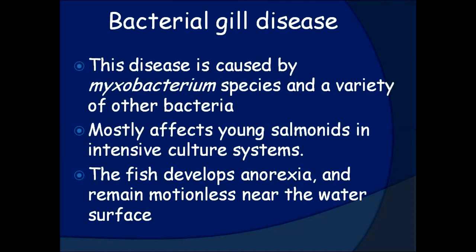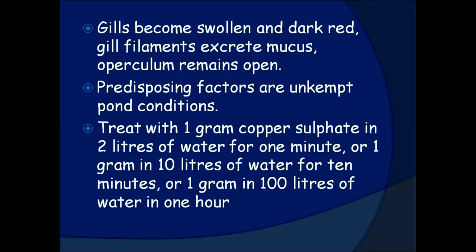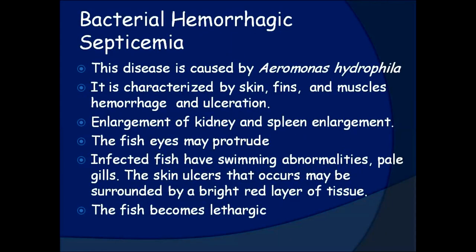Bacterial gill disease. This disease is caused by Myxobacterium species and a variety of other bacteria. It mostly affects young salmonids in intensive culture systems. The fish develops anorexia and remains motionless near the water surface. Gills become swollen and dark red, gill filaments excrete mucus, and the operculum remains open. Predisposing factors are unkempt pond conditions. Treatment: 1 gram copper sulfate in 2 liters of water for 1 minute, or 1 gram in 10 liters of water for 10 minutes, or 1 gram in 100 liters of water for 1 hour.